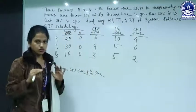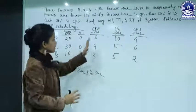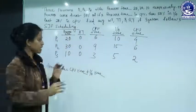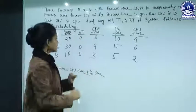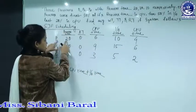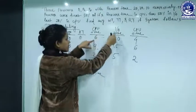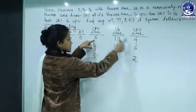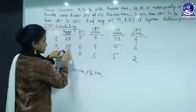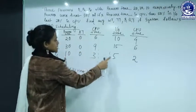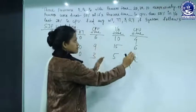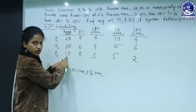We have divided all process times into CPU time, IO time, and last CPU time. You can verify by adding: for P1, 6 + 10 + 4 = 20; for P2, 9 + 15 + 6 = 30; for P3, 3 + 5 + 2 = 10. The table is ready and now we draw the Gantt chart.